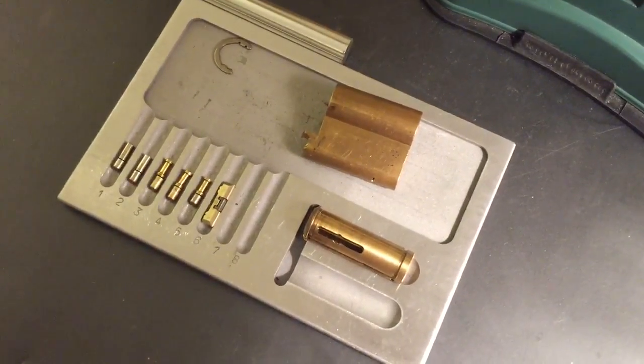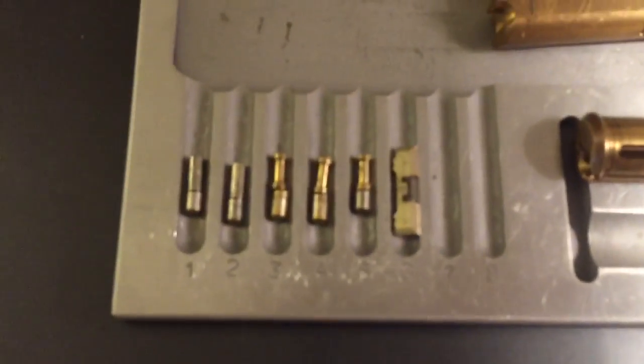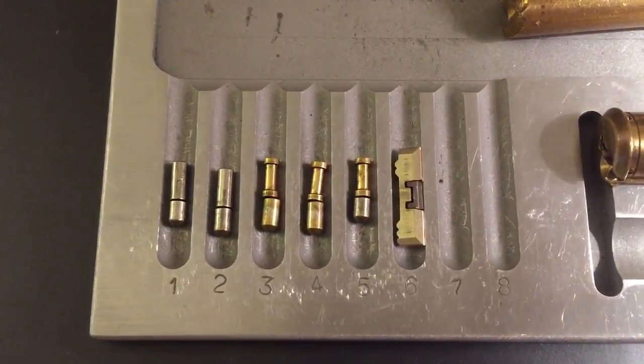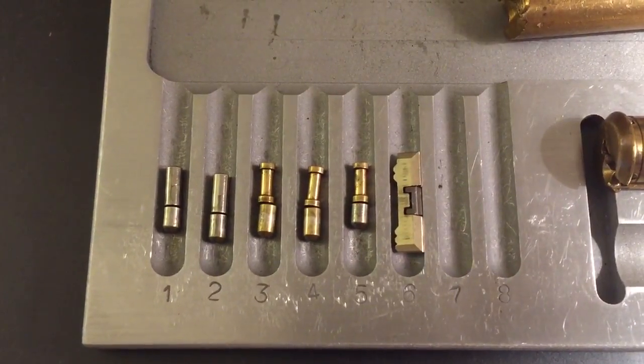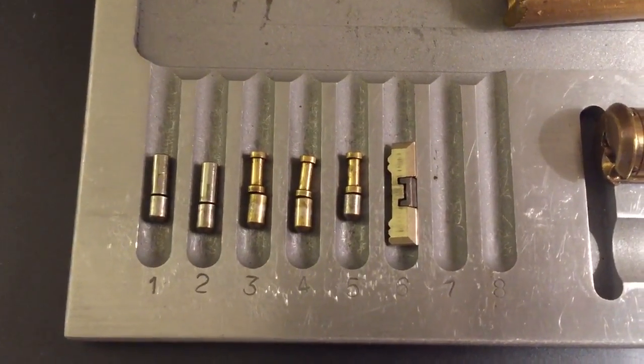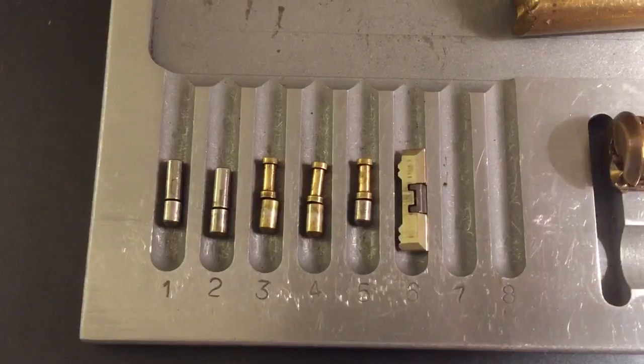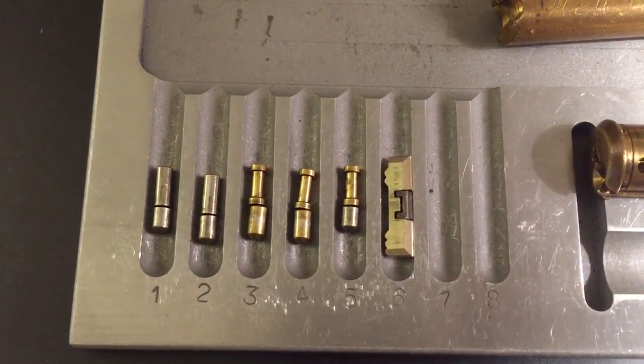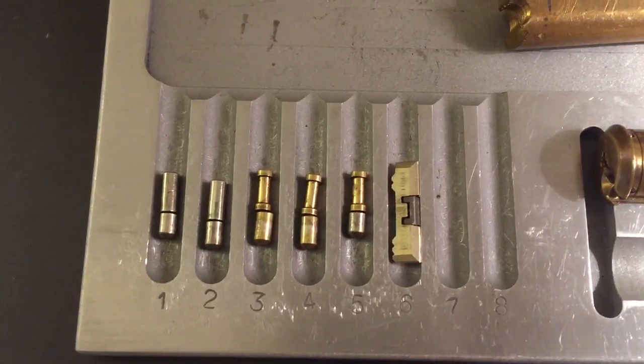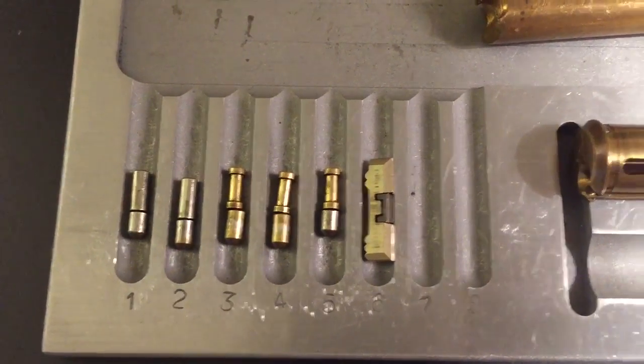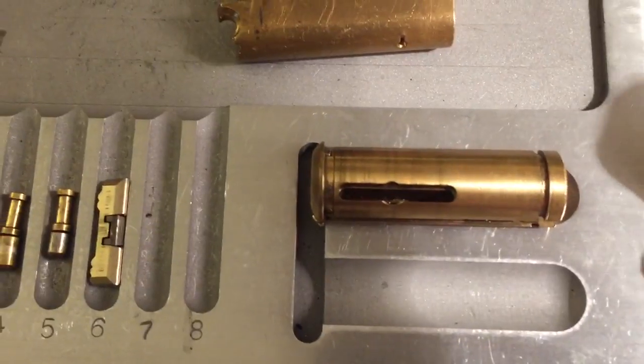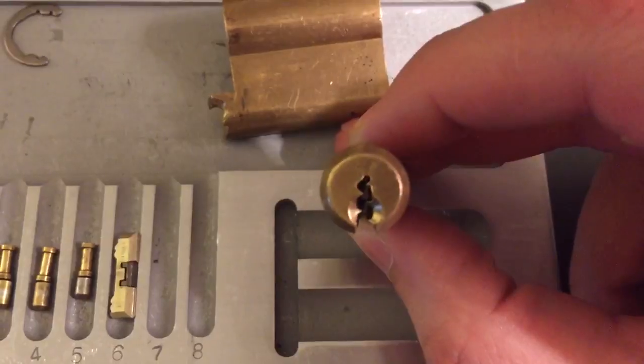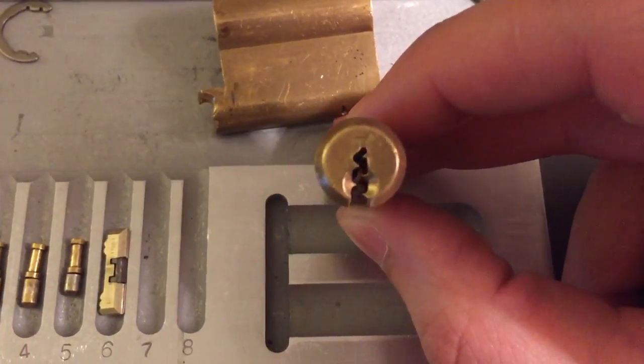Let me give you a close up of this. This is the EVA DPS. All standard pins except for the drivers in pin stacks three, four, and five. We have our passive sidebar that is meant mainly for key profiling, but it also has that little active element that can lock the core up if it's not addressed properly. That goes in here. And of course, probably the largest pick obstacle on the lock is that really nasty keyway it's got.